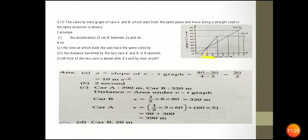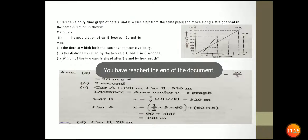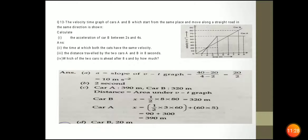For car A, you calculate the area of the rectangle plus area of the triangle. The first part is 1 to 4 (triangle) and the second part is 4 to 9 (rectangle), giving 390 meter. After 8 seconds, determine which car is ahead and by how much.